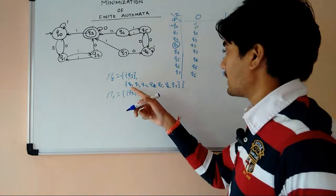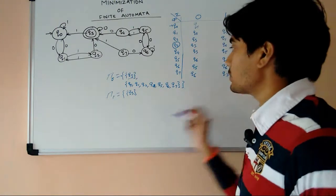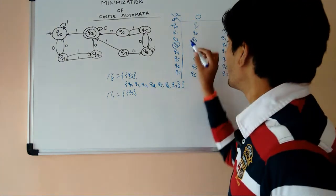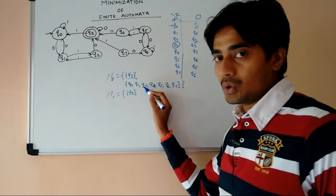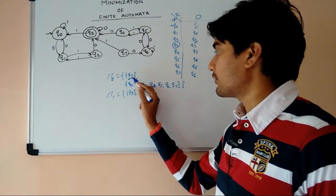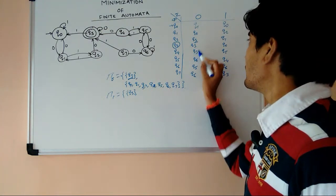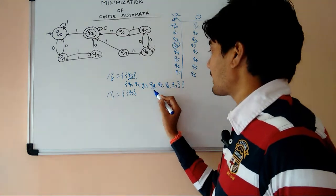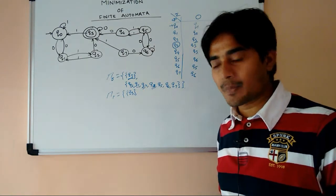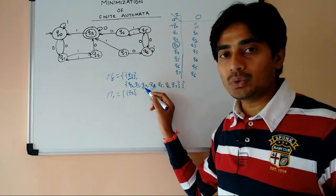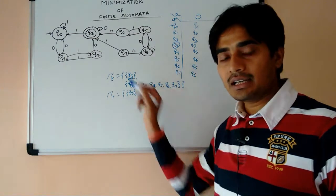As Q0 and Q1 are checked: Q0 for 0 goes to Q1 (same set), and Q1 for 0 goes to Q0, for 1 goes to Q2 — no problem there. But for Q2, for alphabet 0 it is going to Q3, which is in the final set — a different set. So we have to separate Q2. Similarly, Q4 for 0 also goes to Q3. So Q2 and Q4 represent different sets than Q0 and Q1, meaning Q0 and Q1 are 1-equivalent but not equivalent to Q2 or Q4.